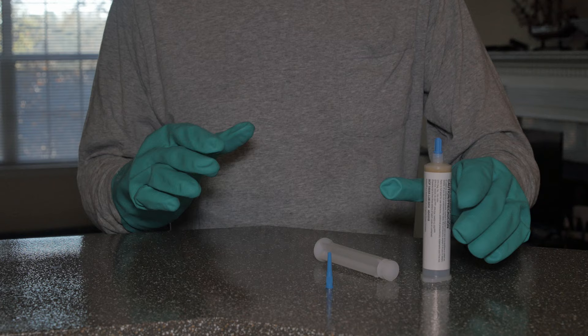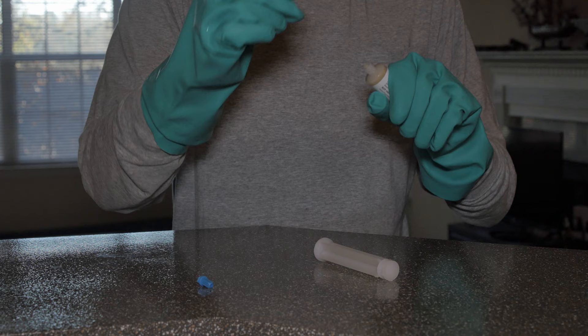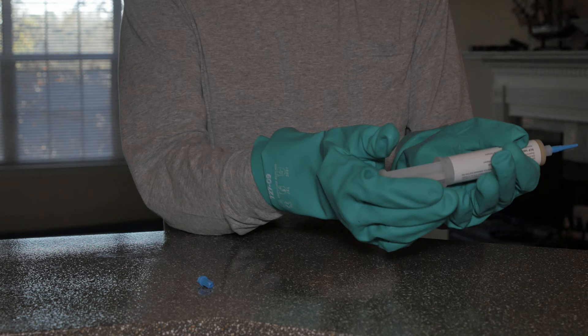Most roach bait gels come in tubes. Tubes typically have a stopper at the end of the tube that you will unscrew, and some have a screw-on applicator tip. Use the plunger included with your bait and insert it in the end of the tube opposite the stopper. You will press on the plunger to release the bait.